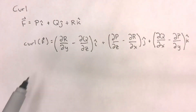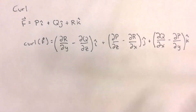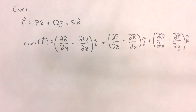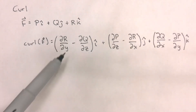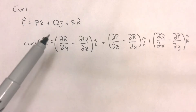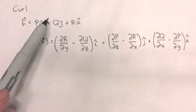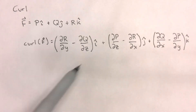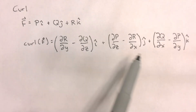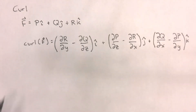Now, if you pay close attention to this combination of partial differential equations, you'll notice that there is a bit of a pattern between the p, q, and r, and the terms in the i, j, and k components of this vector respectively.